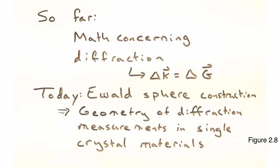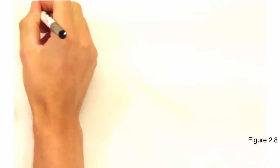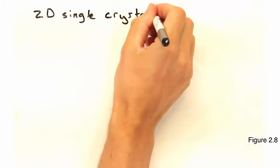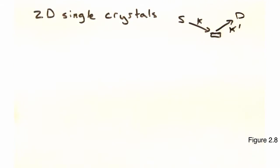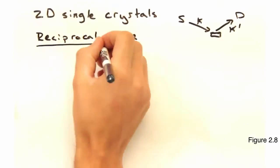To save all of you from our poor 3D drawing skills, we'll be sticking with 2D, but the premise still holds. Let's start by imagining a single crystal in 2D with the following reciprocal lattice.